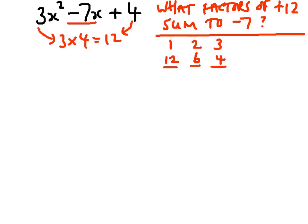Obviously, when I do 1 plus 12, I get 13, 2 plus 6 I get 8, and 3 plus 4 I get 7. None of them are going to give me minus 7. But what I've forgotten is that there are the negative versions of these factors as well. So in fact, we can see that 3 plus 4 is going to be 7.